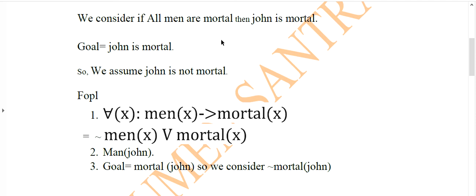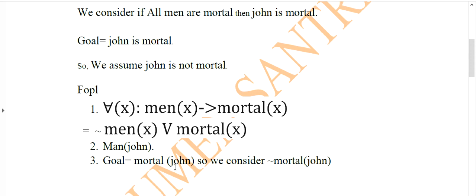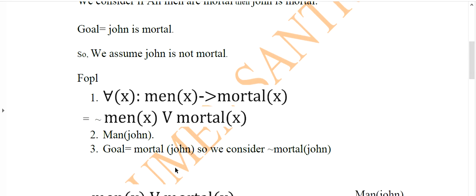John is man — the FOPL is: man(John). John is mortal — the FOPL is: mortal(John). And since we assume that John is not mortal, the FOPL is: negation mortal(John). So we have four statements: (1) negation man(X) OR mortal(X), (2) man(John), (3) mortal(John), and (4) negation mortal(John).